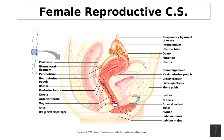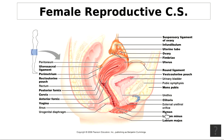The vaginal orifice — V-A-G-I-N-A-L O-R-I-F-I-C-E — is the external opening of the vagina. The hymen — H-Y-M-E-N — is a membranous sheet of tissue which may form a border around the vaginal orifice.